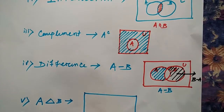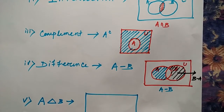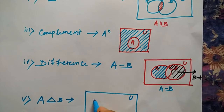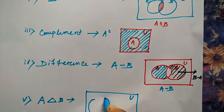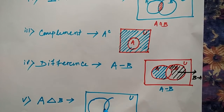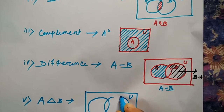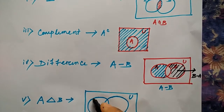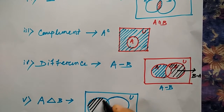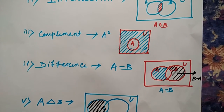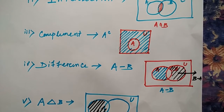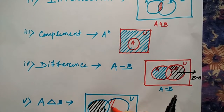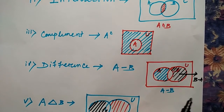The last one is symmetric difference, A delta B. The rule of A delta B is A difference B union B difference A. So A difference B is this part on the left, and B difference A is the part on the right.